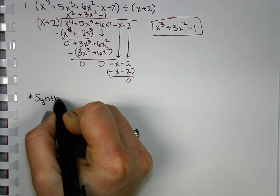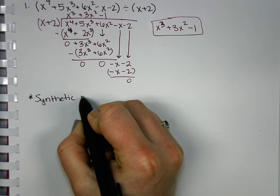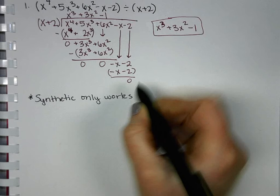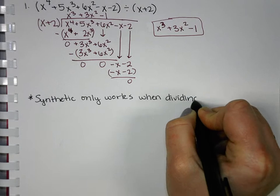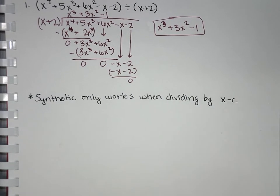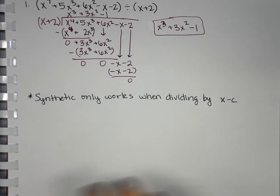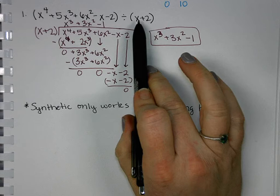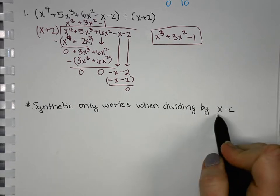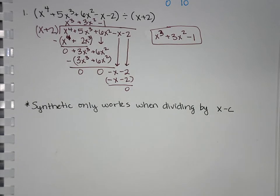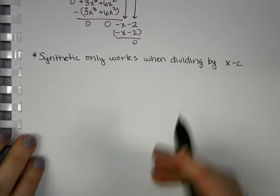Now, to note, synthetic only works when dividing by x minus something or x plus something. So, we could have used synthetic on this last one because it was in that form of x minus something. But if you're ever dividing by something like x squared plus 2x plus 1, synthetic won't work there. It has to be in this form of x minus c. There cannot be a coefficient of x or anything. It has to be x minus c. So, let's try one with synthetic. And then we'll save one for class.